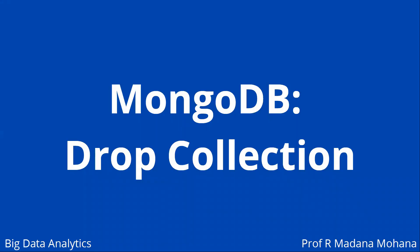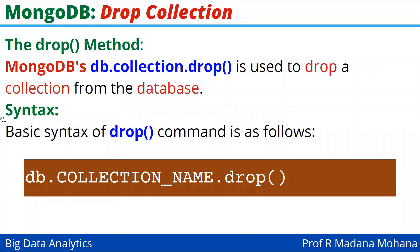Finally, let us see how to drop a collection. Similar to dropping a database in MongoDB, to drop a collection we use the command db.collectionName.drop(), which is used to drop a collection from the database. The basic syntax is: db.collectionName.drop() — where 'db' and 'drop' are fixed, and only the collection name changes depending on which collection you want to drop.